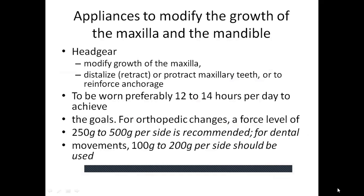Appliances to modify maxillary and mandibular growth allow differential jaw growth during adolescence, when the mandible has more growth potential than the maxilla. Extra-oral forces such as headgear or functional appliances are used to modify growth in Class 2 patients. Growth modification is most successful in pre-adolescent children with good compliance and growth potential. A headgear worn 12–14 hours per day is recommended; orthopedic changes require 250–500 grams per side, dental movements require 100–200 grams per side.